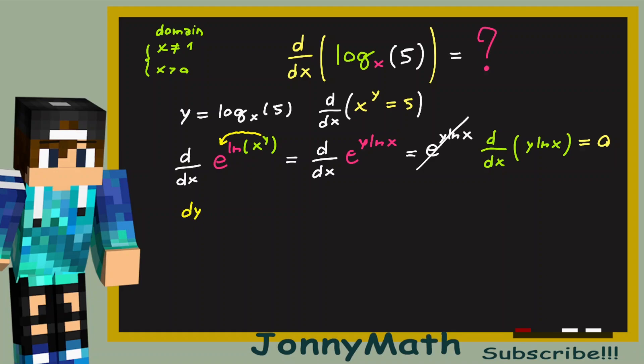So the derivative of the first function. So dy by dx times the second function, the natural log of x. Then we have plus the derivative of the second function. The derivative of the natural log of x is 1 over x, times the first function, that is y. And all of this equals 0.